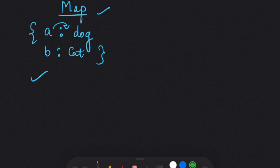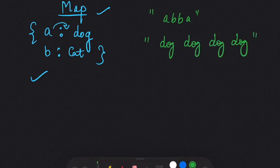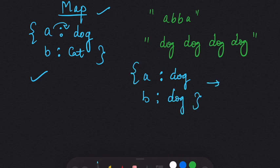But what if we had a pattern 'a b b a' and the string 'dog dog dog dog'? In this case the map would have both 'a' and 'b' corresponding to 'dog', and the output would be true — but this is incorrect. The output should be false.